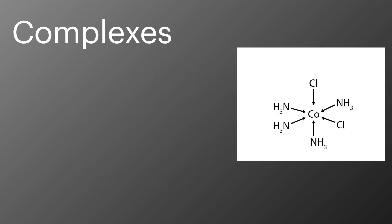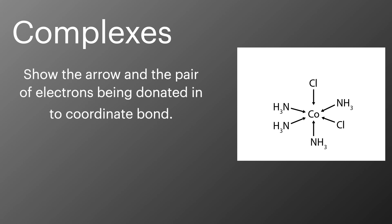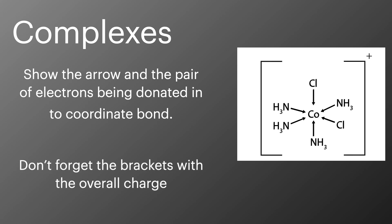Here we've drawn out this octahedral complex and used arrows to show that the pair of electrons is being donated from the ligand to the metal ion. We then need to add brackets to show that the complex has an overall charge. It is possible to draw complexes slightly differently and you might see different pictures on the internet, but the most important things are that you have the right number of ligands, the right shape, and the brackets around the outside.